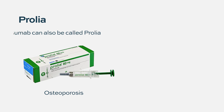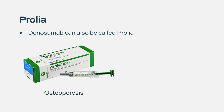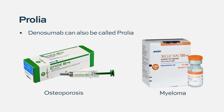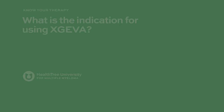Prolia is another name for Denosumab, but it's called Prolia when it's used for osteoporosis in patients that usually don't have multiple myeloma, whereas we call it Xgeva when it's used for patients with multiple myeloma.